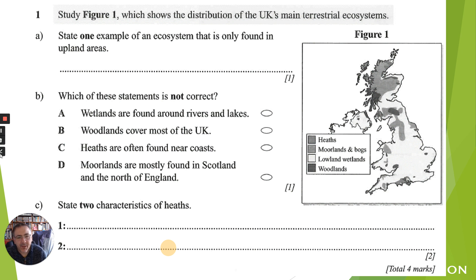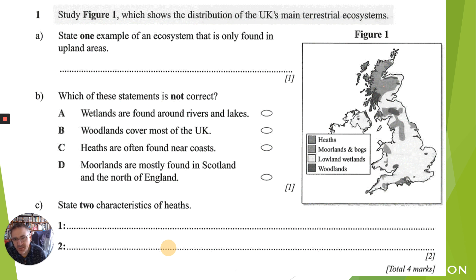Let's do a quick bit of exam practice. Looking at figure one: 'State one example of an ecosystem found in upland areas.' This refers back to the work we did on the changing UK landscapes. Upland areas are found particularly up in Scotland, and we can see a huge area of heath and moorland, so heath, moorland, or bogs would be an appropriate answer.